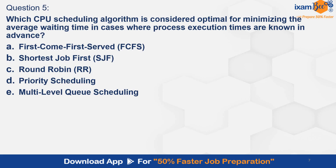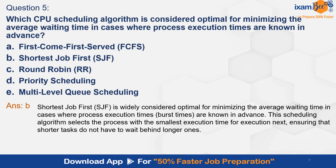Question 5. Which CPU scheduling algorithm is considered optimal for minimizing the average waiting time in cases where process execution times are known in advance? Option A. First come first served. B. Shortest job first. C. Round robin. D. Priority scheduling. E. Multi-level queue scheduling. And the correct answer is B — shortest job first. SJF is widely considered optimal for minimizing average waiting time, selecting the process with the smallest execution time next, ensuring shorter tasks do not have to wait behind longer ones.